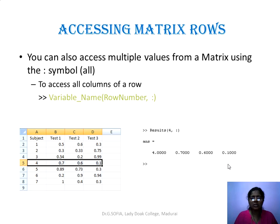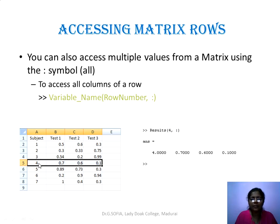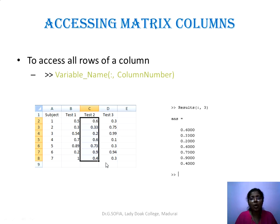The colon symbol can be used to access multiple values from a matrix — it refers to all. To access all columns of a specific row, use 'results(4,:)', meaning the fourth row but all column values. To access all rows of a specific column, use colon as the first argument and specify the column number as the second argument.